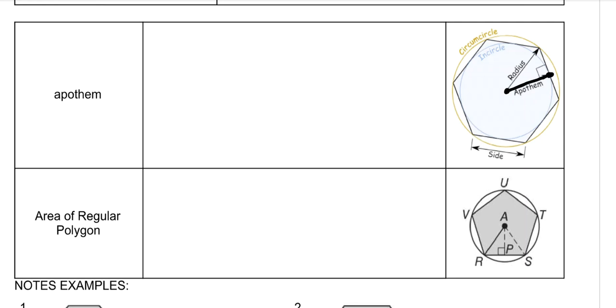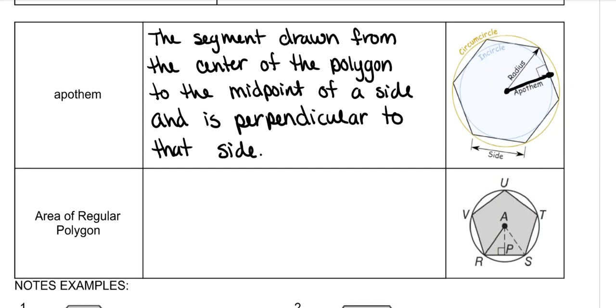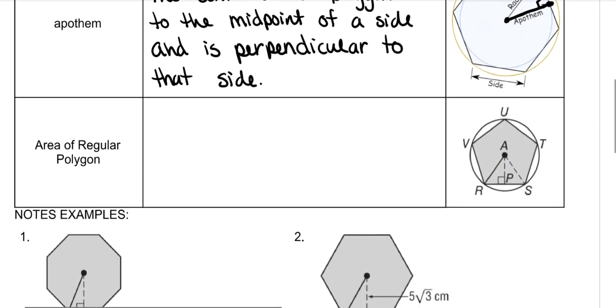It's always from the midpoint. It doesn't have to be on that side. It can be on any of these sides. All of these would be apothems. You only need one, but it's always from the midpoint to the center every time. And it's also always perpendicular.